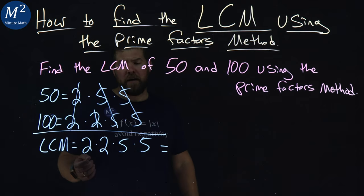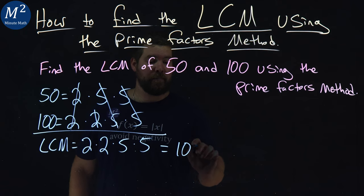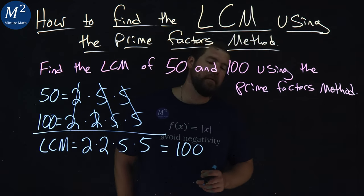Now, hopefully you recognize what 2 times 2 times 5 times 5 is, we just did it, and that's 100, right? Again, 5 times 5 is 25, times 2 is 50, times 2, 100.